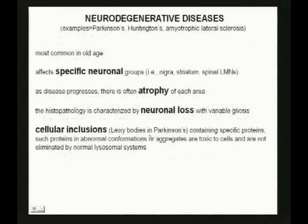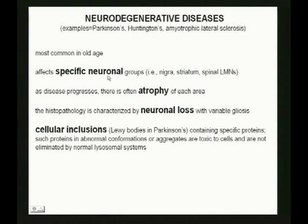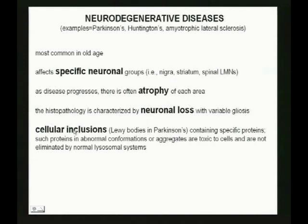Parkinson's is a neurodegenerative disease. Other examples include Huntington's and ALS. Neurodegenerative diseases are most common in older people. They affect specific neuronal cell groups — the substantia nigra, striatum, or spinal lower motor neurons in ALS. As the disease progresses, there's atrophy — of the nigra in Parkinson's, of the striatum in Huntington's — with neuronal loss and cellular inclusions. One of the most famous inclusions is the Lewy body, found in the substantia nigra in Parkinson's.